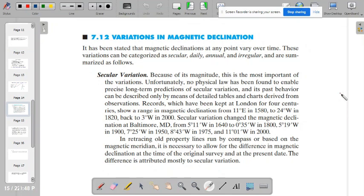The past behavior can only be described by means of detailed tables and charts, which they derive from the observations. There are records which have kept at another country like London for centuries. In retracing old properties run by compass or based on the magnetic meridian, it is necessary to allow for the difference in magnetic declination at the time of the original survey and at the present date. The difference is attributed mostly to secular variation.